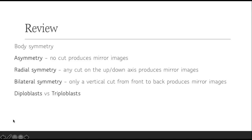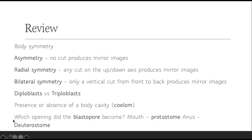Then we talked about diploblasts versus triploblasts, and the presence or absence of a body cavity, which we called the celome. And which opening did the blastopore become? If it becomes the mouth, that organism is known as a protostome. If it is the anus, like in humans, we are called deuterostomes.